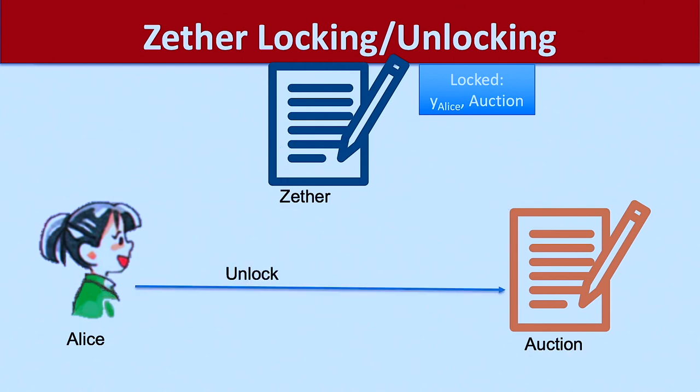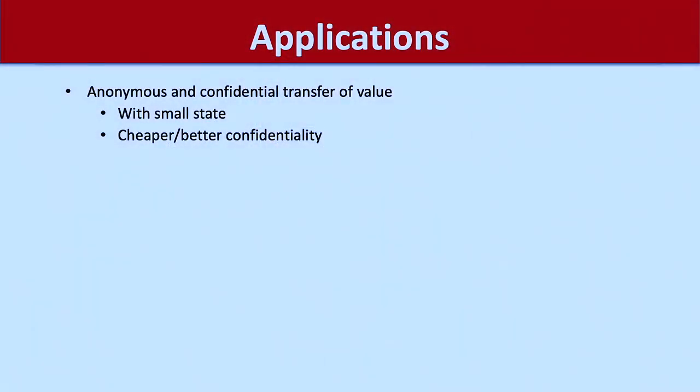The same goes with unlocking — only once the auction is finished can Alice unlock her money. The important thing is that Alice can evaluate the auction contract beforehand — the whole functionality is public. So Alice has to trust the smart contract to only do things she agrees with; otherwise she shouldn't lock her money to it. This simple locking and unlocking design gives us a lot of applications.